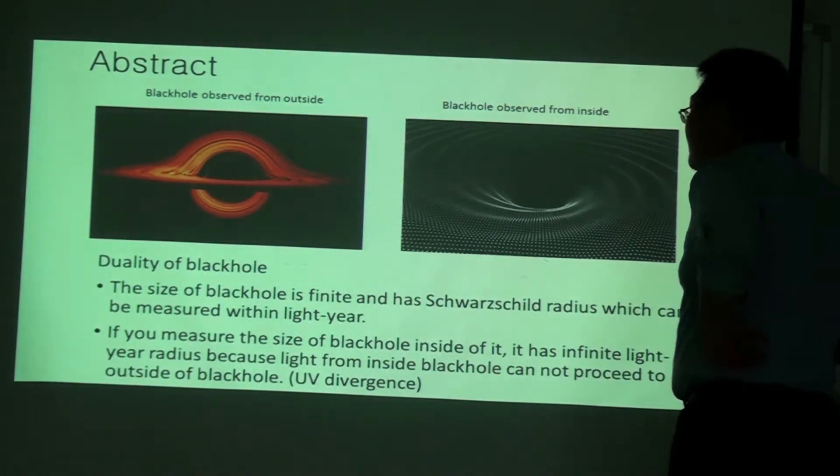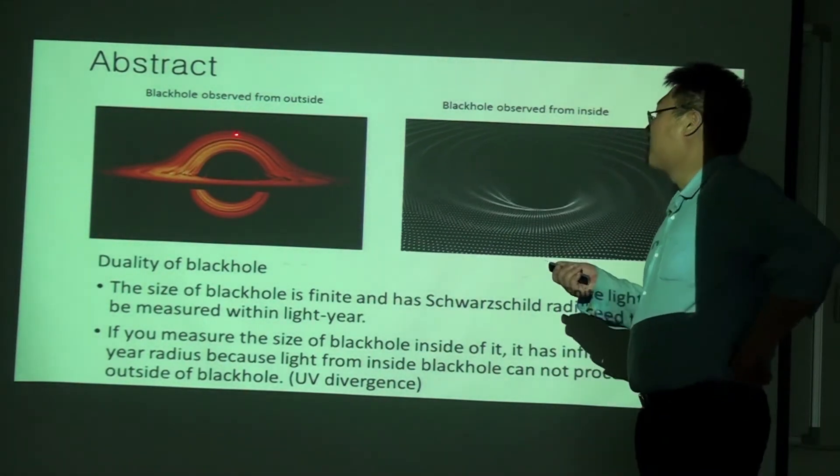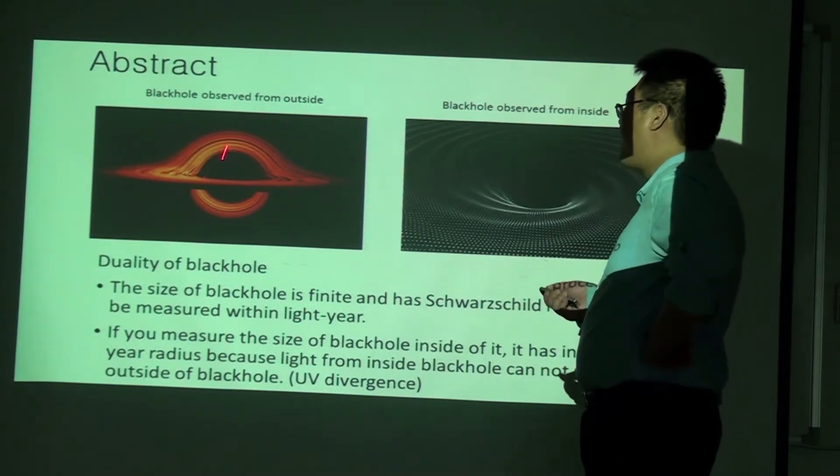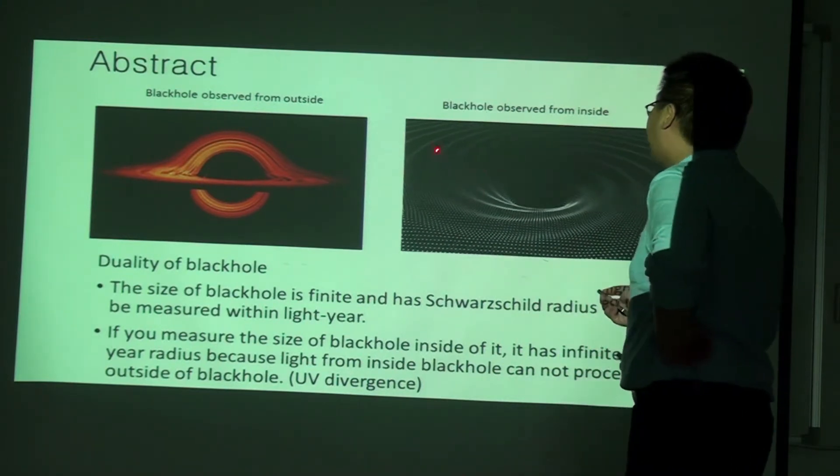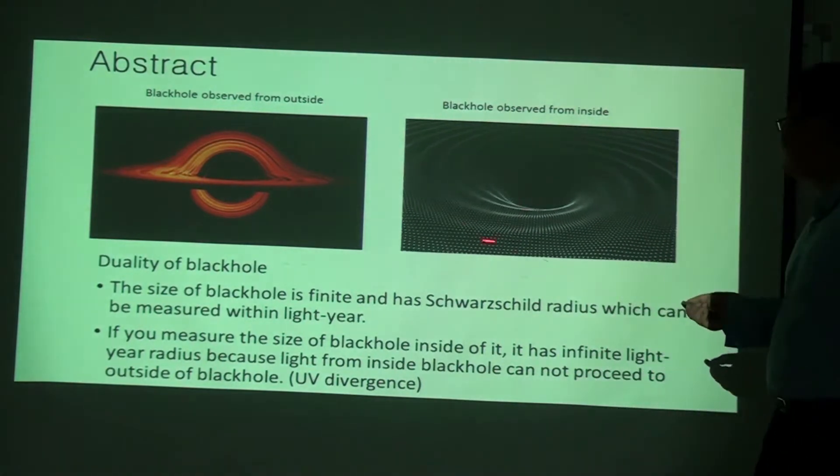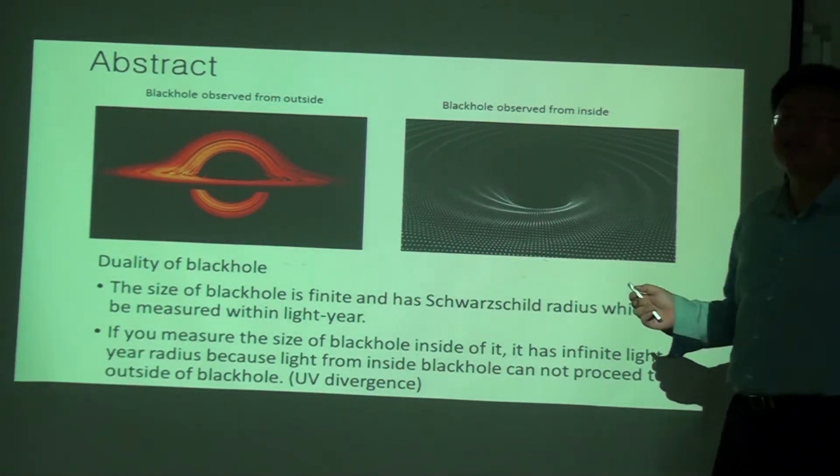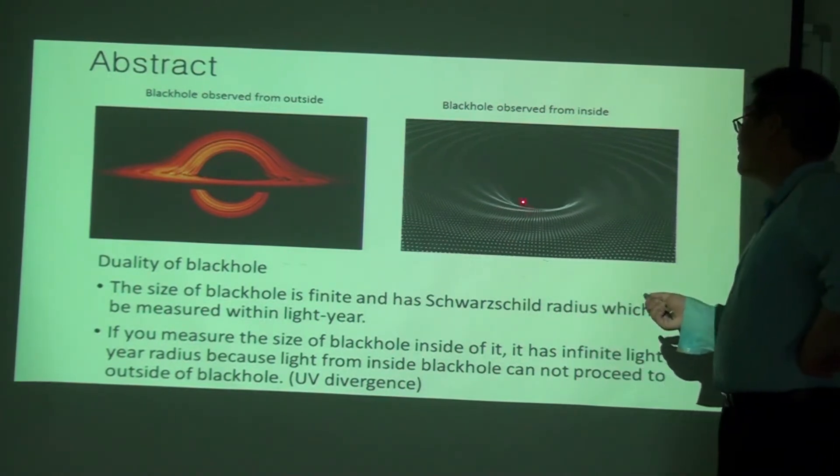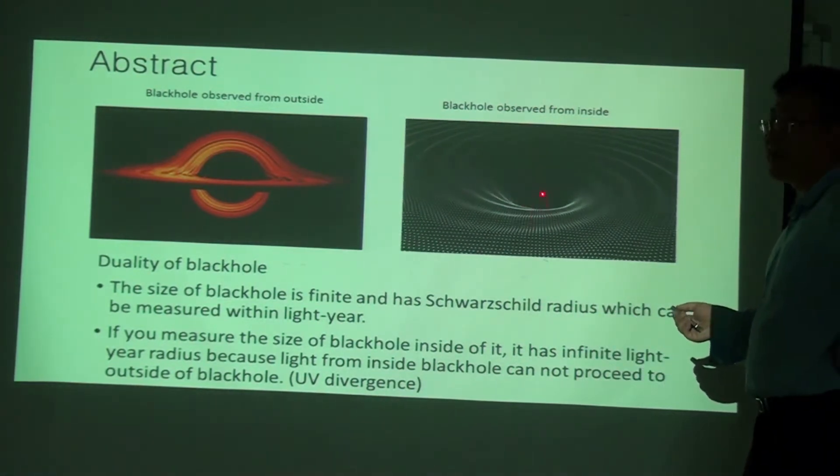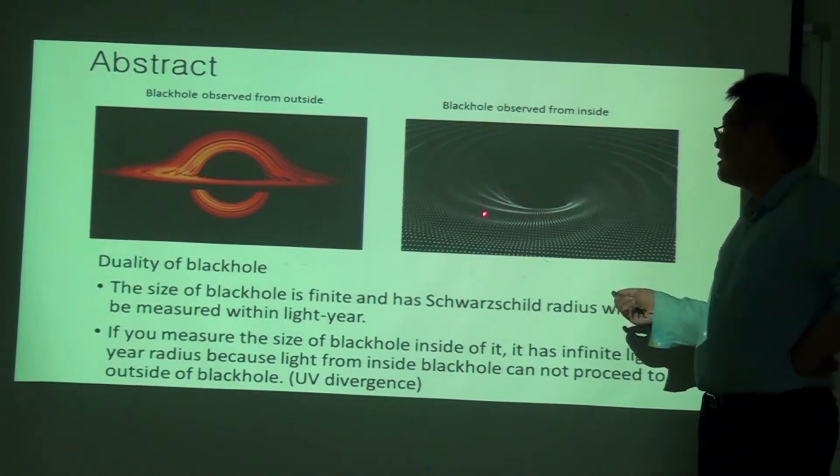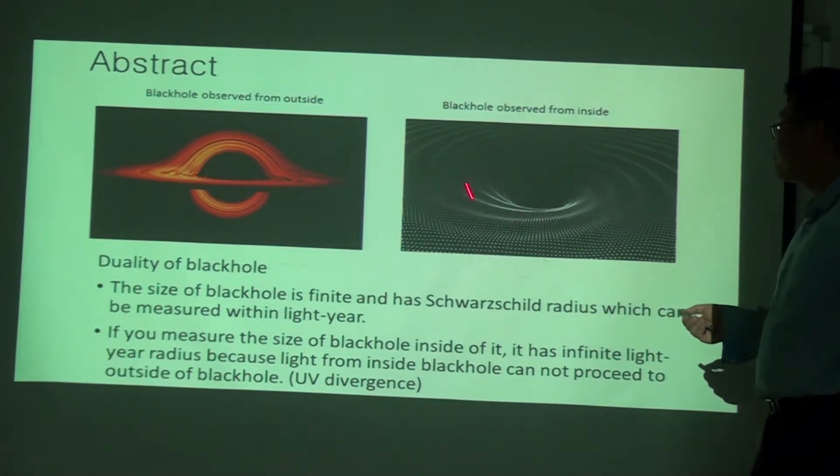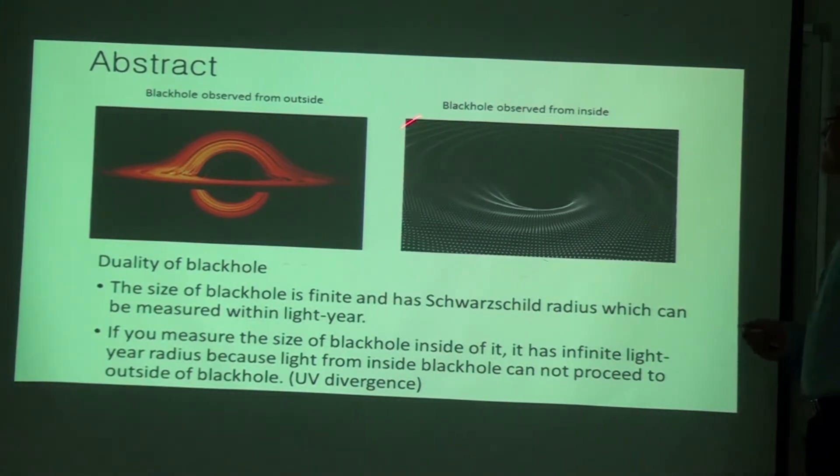First, black hole. There is a duality in black hole. If you observe black hole from outside, it has finite radius. But if you observe black hole from inside, it has infinite radius because of the curvature. It has infinite curvature. So even light cannot escape from black hole.